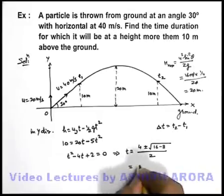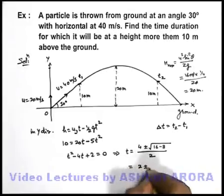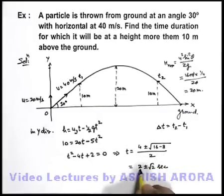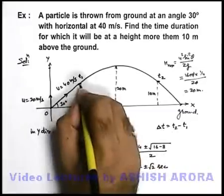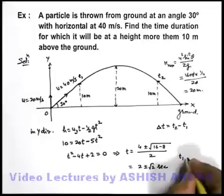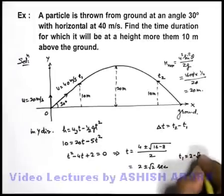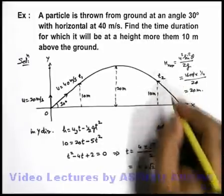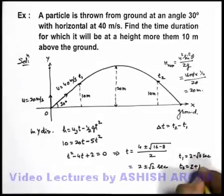So the result we are getting here is 2 plus minus root 2 second. So there are 2 values of time we can say. At one time t1, when particle is reaching the height 10 meter, that will be 2 minus root 2 seconds. And t2 is the time when it is again at 10 meter, that is 2 plus root 2 second.